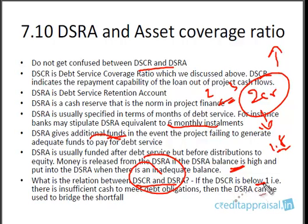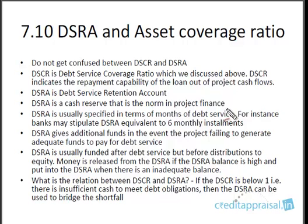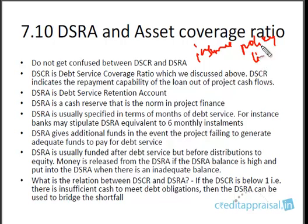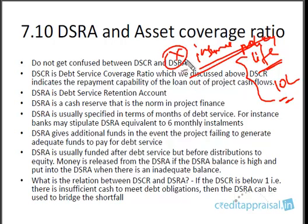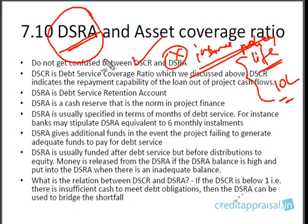DSRA is normally not enforced, and nobody wants it to be enforced — neither the bank nor the company — because when it is enforced it means the situation of the company is not good. It is like an insurance policy: there is a policy covering the life of a policyholder, and if the person dies you get a payout — but you don't want the person to die. Similarly, bankers don't want DSRA to be enforced; if it comes to the extent of enforcing DSRA it means the account is in bad shape. But it provides a sort of safety net to the bankers.